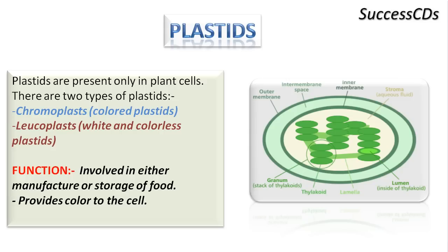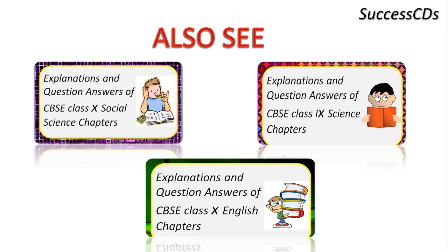Plastids are only present inside plant cells. They are broadly of two types: chromoplasts, which are colored plastids, and leukoplasts, which are white and colorless plastids. Their function is to provide color to the cell. Plants also have a pigment called chlorophyll, which is found in chloroplasts. That covers all the content in this chapter.